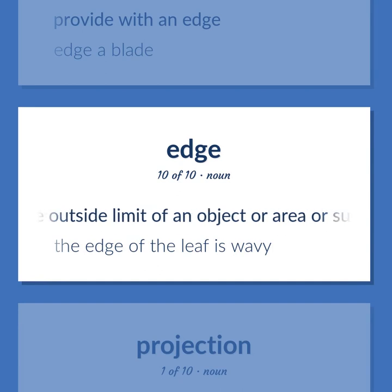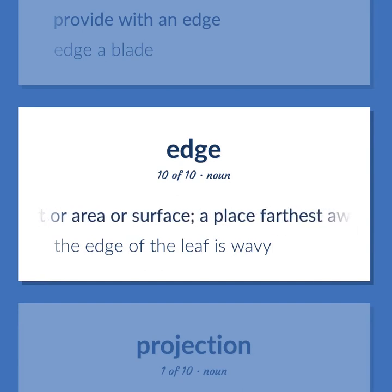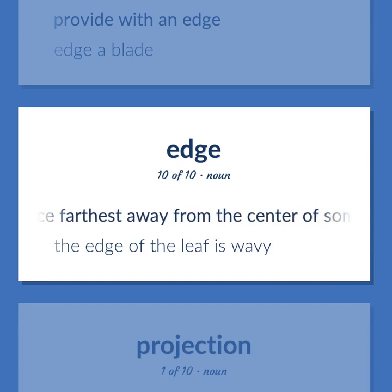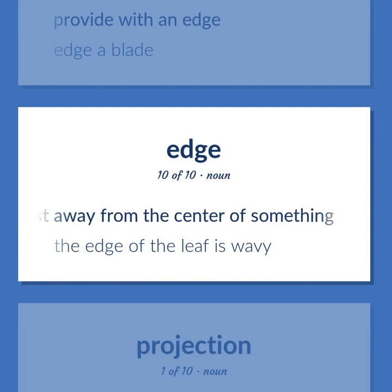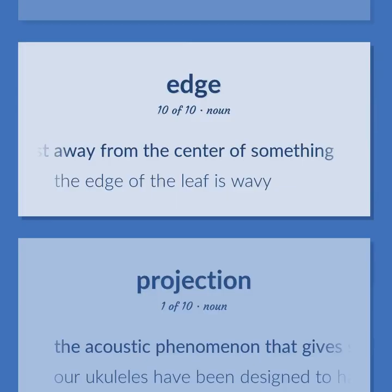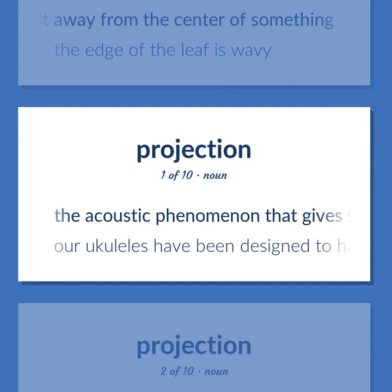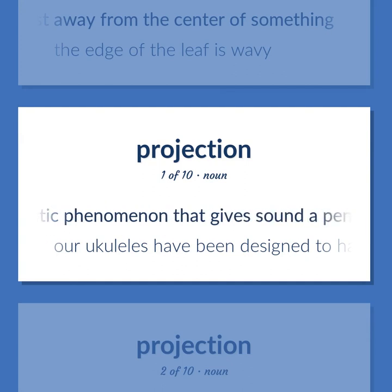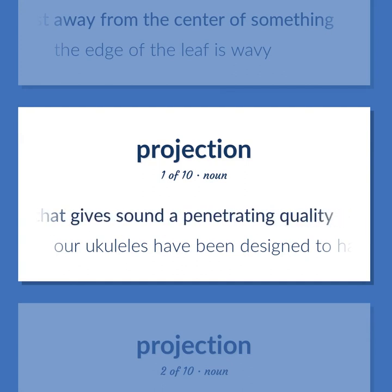EDGE (continued): The outside limit of an object or area or surface; a place farthest away from the center of something — 'the edge of the leaf is wavy.' The acoustic phenomenon that gives sound a penetrating quality.